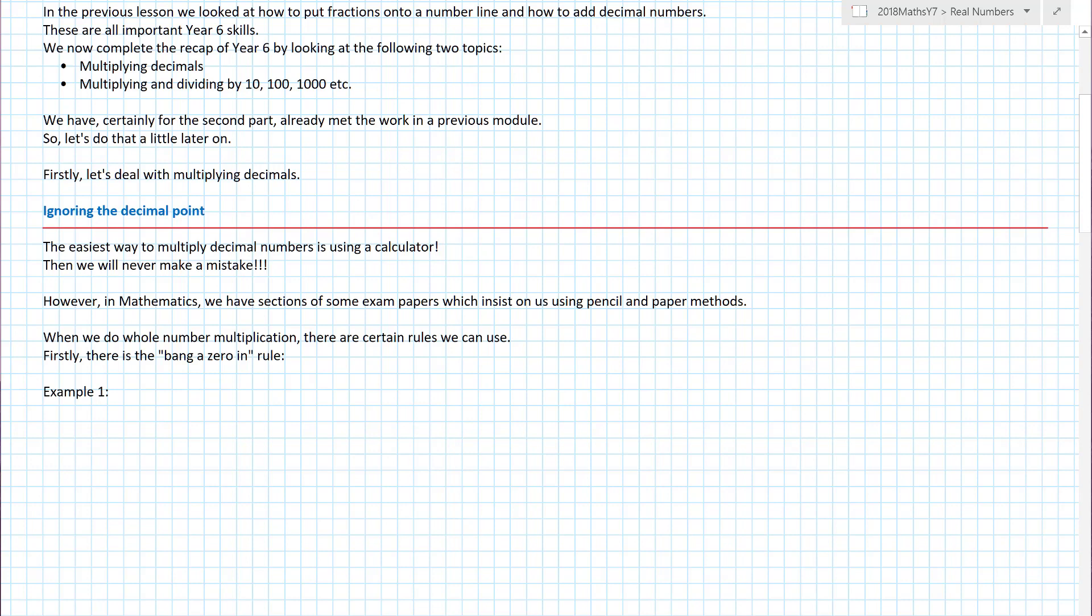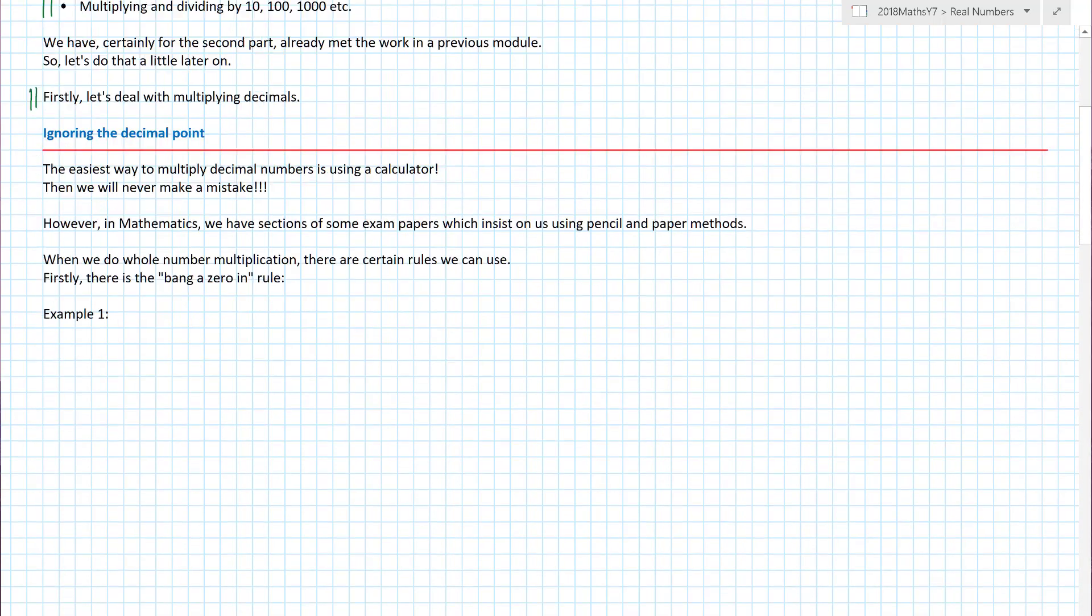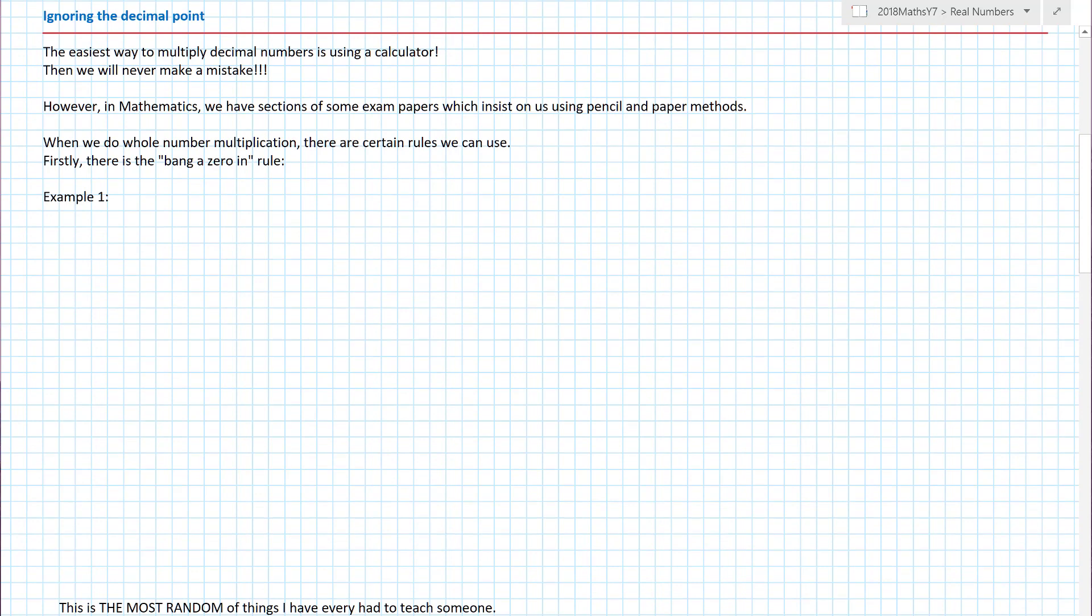We will now complete the recap of year six. We are teaching maths in a very different way in Australia, a very funky way. We do the bits and only teach the bits the kids don't know. We are skipping on soon to the year seven stuff. Right, now, firstly, we've got to deal with multiplying decimals. When we do a whole number multiplication, there are certain rules we can use. Firstly, there is the bang a zero in rule.